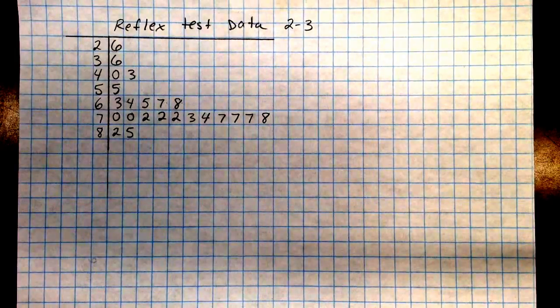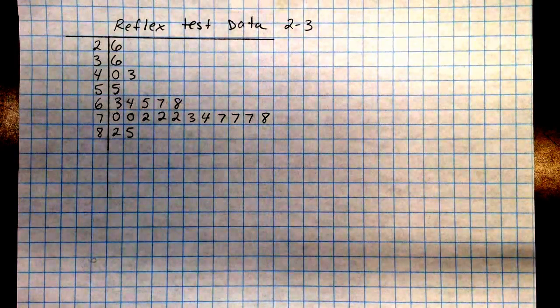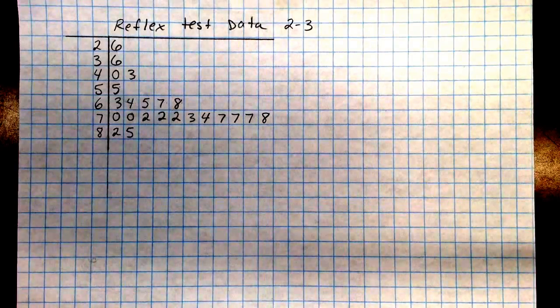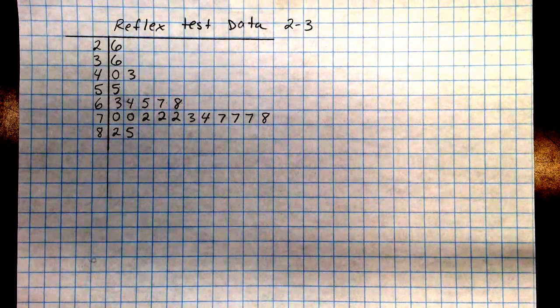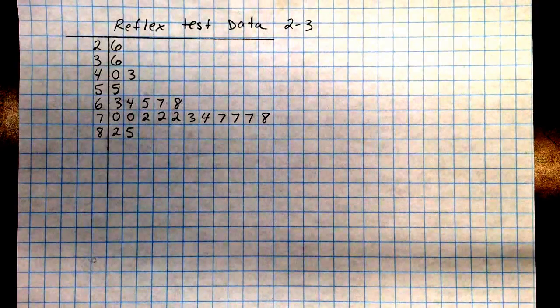I thought we'd use the data from the reflex test from period 2-3 we did with the tape measures, and we're going to use our numbers in the form of stem leaf plot, make a box and whisker plot, and also calculate thresholds if we have time.